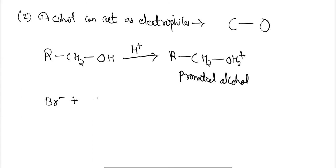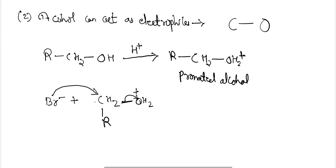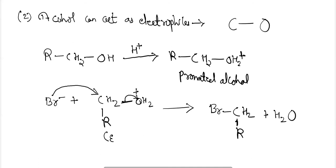When a reagent comes in front of the protonated alcohol, due to the presence of a positive charge, the electrons from the bond between carbon and oxygen will be broken out due to heterolytic separation. The reagent will attach to the carbon atom, so the carbon-oxygen bond of the alcohol is broken to complete the electrophilic reaction.